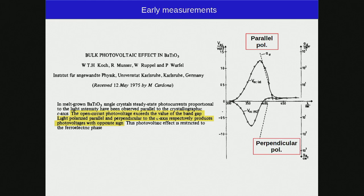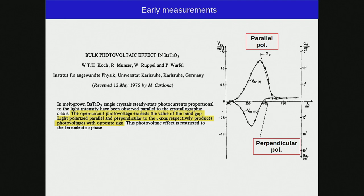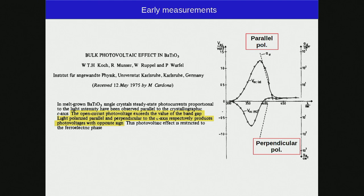An early measurement of the effect in barium titanate, a ferroelectric, illustrates how a bulk photovoltaic spectrum can look. The authors highlight that the open-circuit photovoltage exceeds the band gap, and light polarized parallel versus perpendicular to the C-axis produces photovoltages with opposite sign. So depending on the polarization direction, you can obtain photovoltage or photocurrent in one direction or the other, and even for a given component the sign can switch depending on frequency.